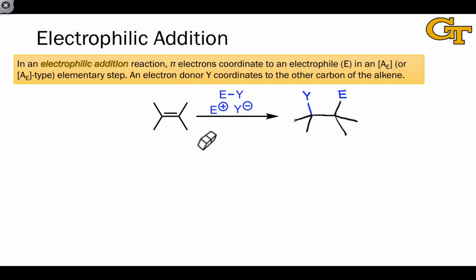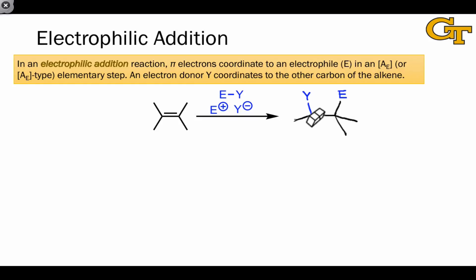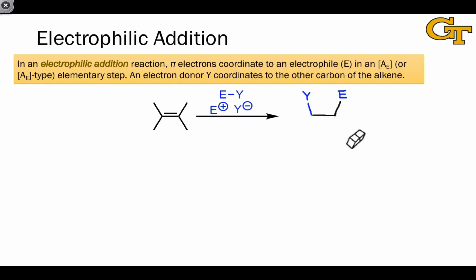Notice that this reaction converts trigonal planar atoms into tetrahedral atoms — it has the potential to create stereocenters. To illustrate that, let's replace these bonds that appear to be in the plane of the screen with wedges and dashes.